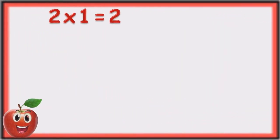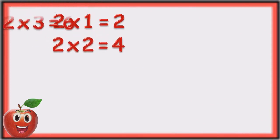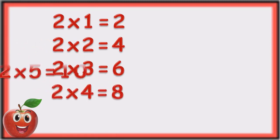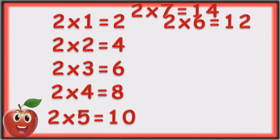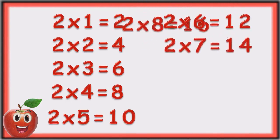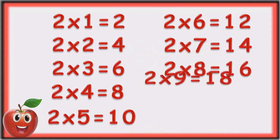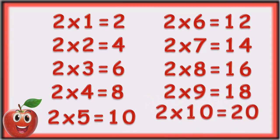Two ones are two. Two twos are four. Two threes are six. Two fours are eight. Two fives are ten. Two sixes are twelve. Two sevens are fourteen. Two eights are sixteen. Two nines are eighteen. Two tens are twenty.